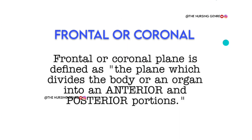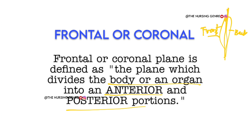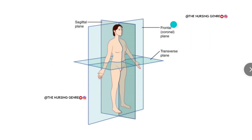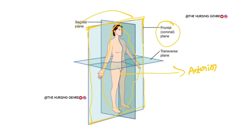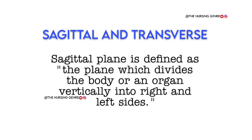The frontal or coronal plane is defined as the plane which divides the body or an organ into anterior and posterior portions. If you divide the anterior portion and posterior portions, we know that we can call it the frontal plane or coronal plane. So anterior and posterior divide is the frontal or coronal plane.